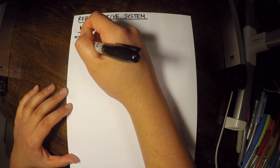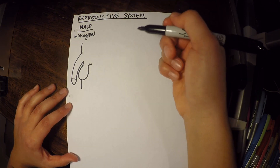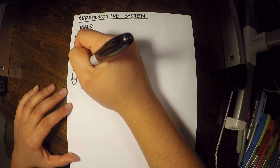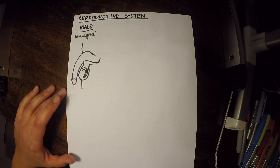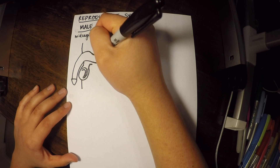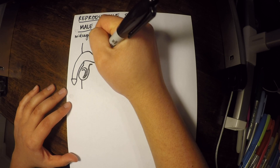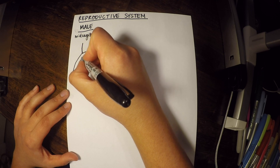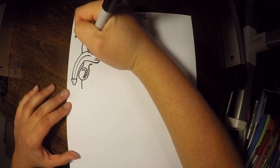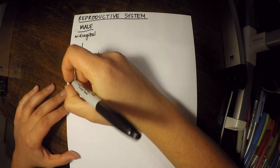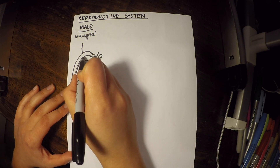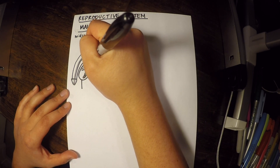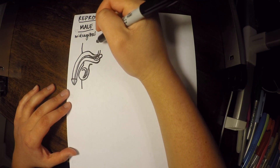Let's draw some stuff out — penis, testes — we'll label all of those things later. Sometimes I like to keep this so you can follow along and draw with me as if we were in class, but I know it can get tedious. So if you want to just fast forward, that is cool with me.